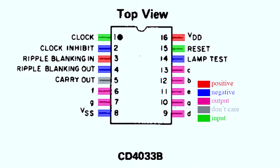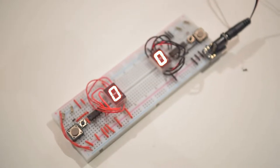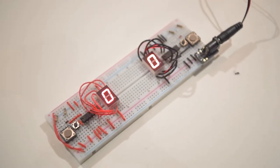With the clock pin connected to the large PBNO and the reset pin connected to the small PBNO, the clock inhibit as well as the ripple blanking out and lamp tests are grounded. Finally, the ripple blanking in is presented with a high so that the segment displays zeros. The purple pins on the diagram are all directly connected to the seven segment display for outputting numbers.